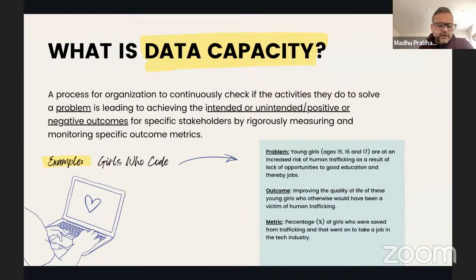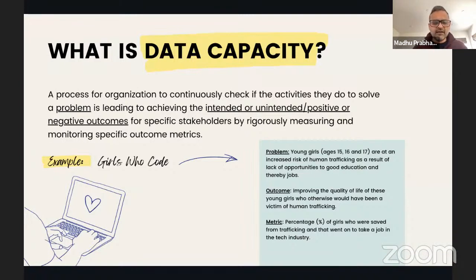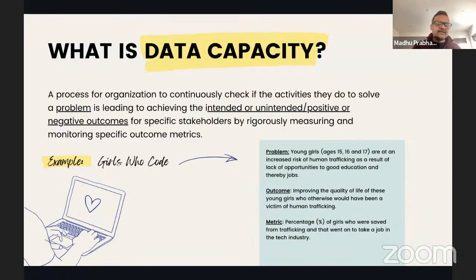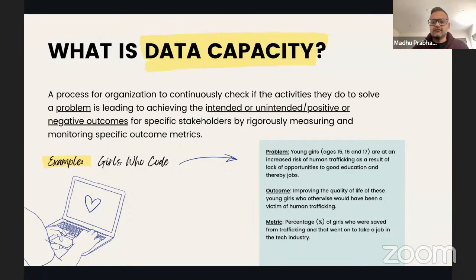Data capacity means being intentional about measuring and monitoring outcome metrics that help you keep track of whether your organization is on the right track — whether you're actually solving the problem of the stakeholders you're running those initiatives for. As a practical example, we've taken a Girls Who Code scenario: young girls aged 15, 16, and 17 are at an increased risk of human trafficking as a result of lack of opportunities to good education and thereby jobs.